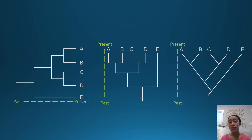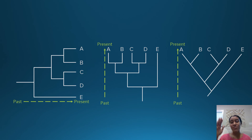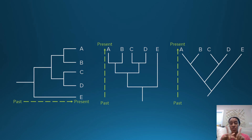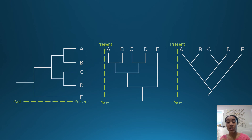Phylogenetic trees can come in various forms — some are written left to right, some are top-down or bottom-up, and some have a V-shape structure rather than a square structure. All three forms are actually showing the exact same information, so make sure you know how to read a phylogenetic tree no matter what form it comes in.